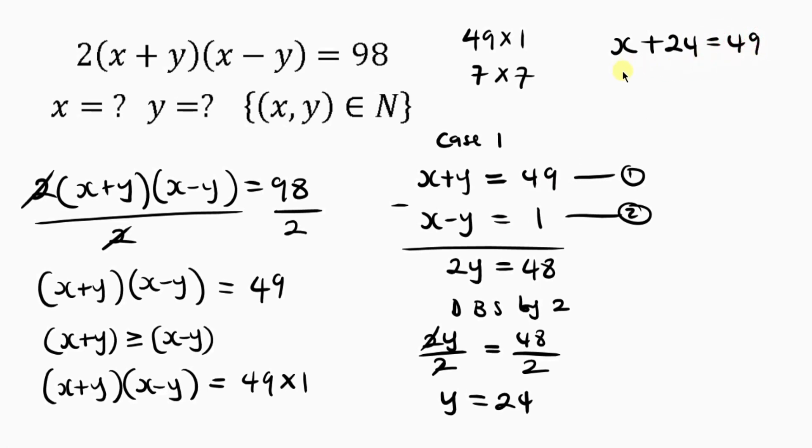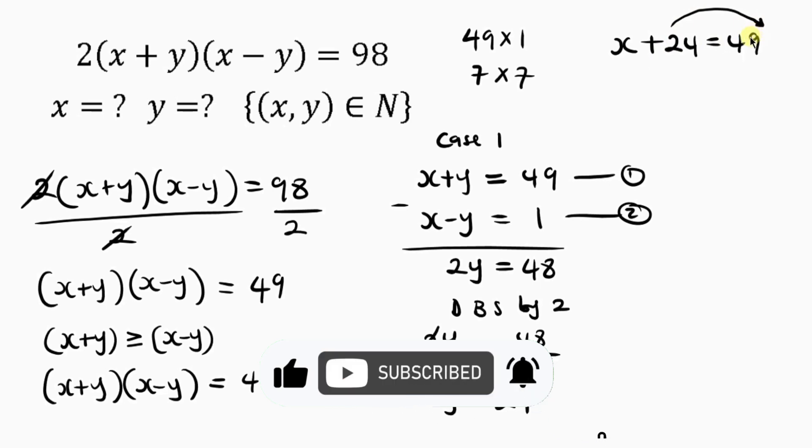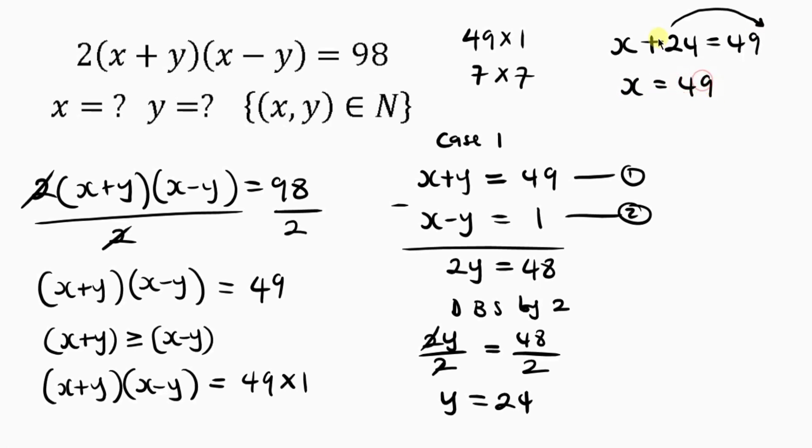Now let's collect like terms, which means I'm going to be moving plus 24 to this right-hand side. When plus 24 crosses to the right-hand side, it becomes negative. So I have x to be equal to 49 minus 24, which gives 25. So we have x to be 25 and we have y to be 24.